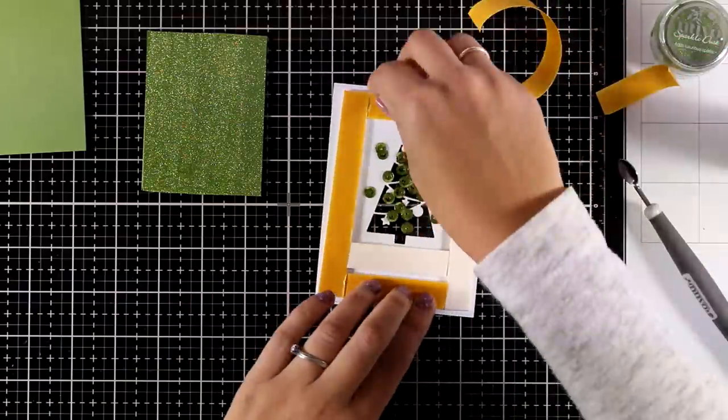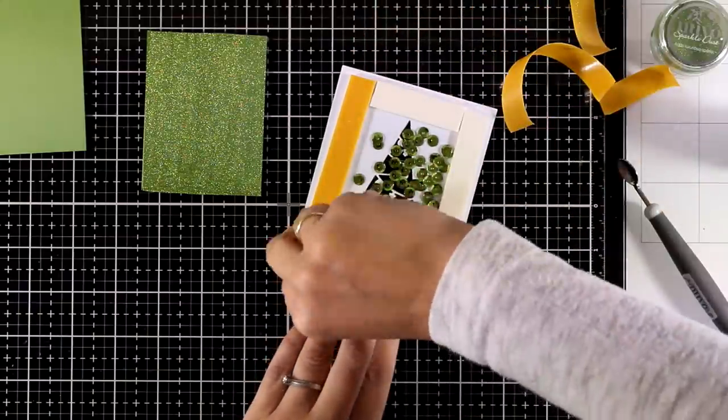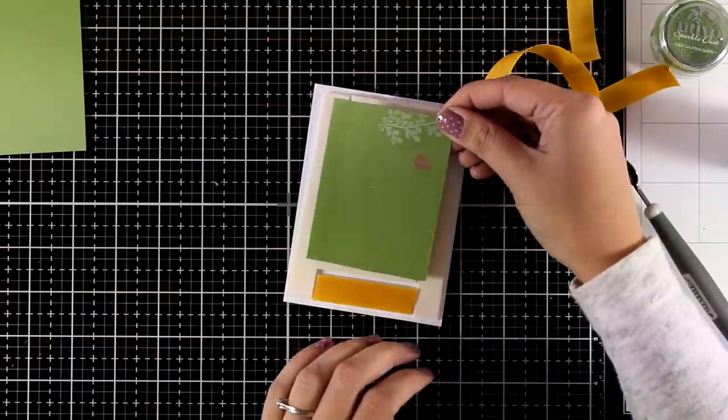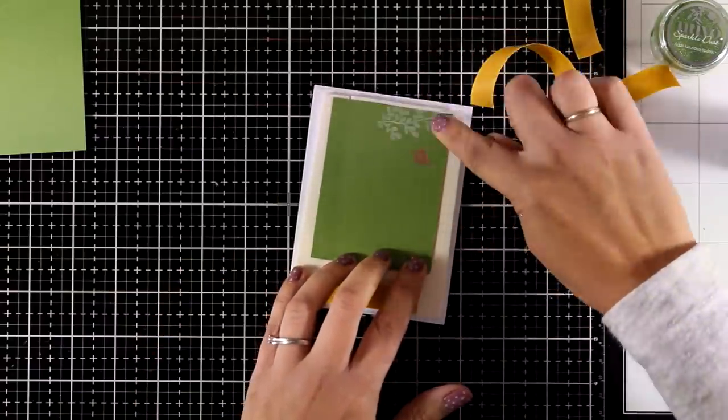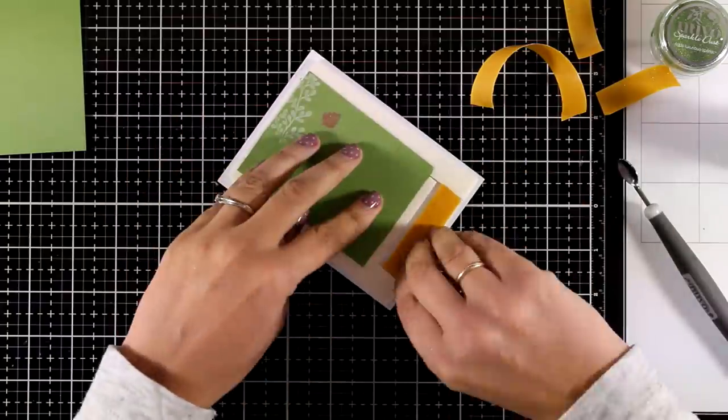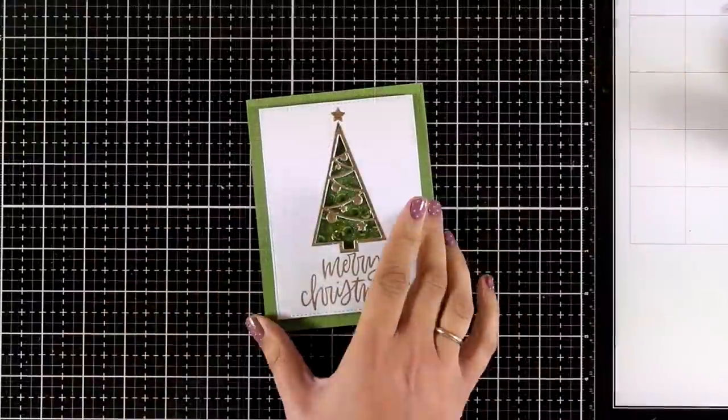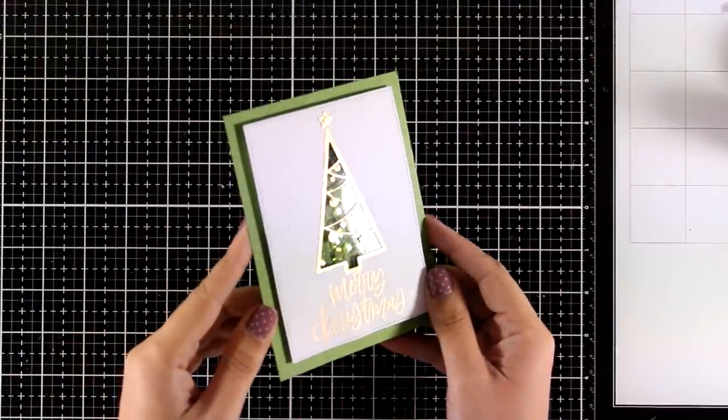I am going to peel off the backing, stick that little piece there making sure that it is nicely stuck and nothing is going to go outside and fly away of the window and then I am going to place that on top of my card base.